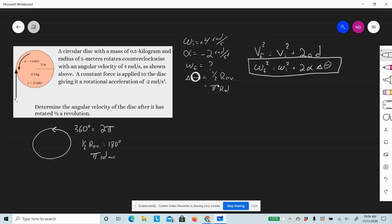The final angular velocity squared equals the initial angular velocity of 4 radians per second squared, plus 2 times alpha, which is negative 2 radians per second squared, multiplied by the change in distance, which is π radians.